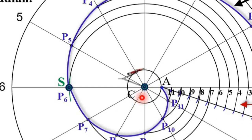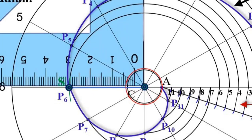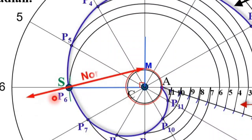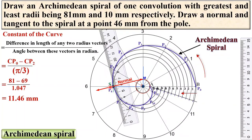Draw the circle with C as the center — this red circle has the radius equal to the constant of curve. Now join S with the center C, so draw line SC. Draw a perpendicular to this SC line using a set square — set one edge of the set square along SC so that the second edge automatically gives the perpendicular line. This perpendicular line will cut the red circle at a point — mark it as M. Join M to S, and that line MS will give you the normal.